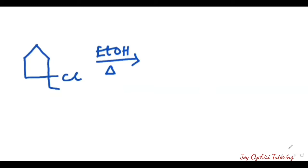For this next example, we must figure out what type of mechanism to use. The base given is ethanol, which is an alcohol, so we go straight to E1 elimination. Looking at the structure, this is a tertiary alkyl halide — attached to three carbons — so it can undergo both E1 and E2. But the alcohol base is what leads us to choose E1.